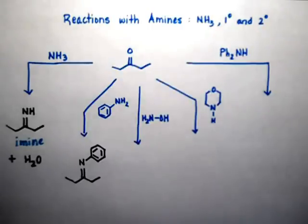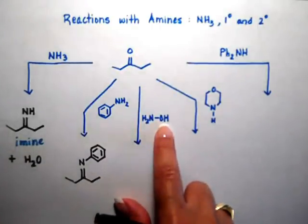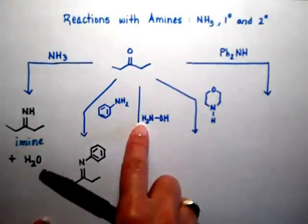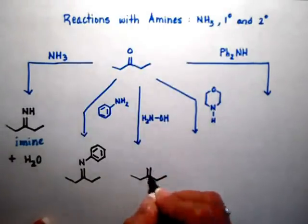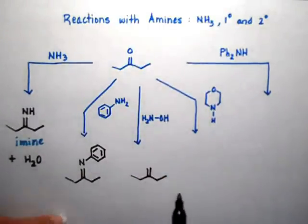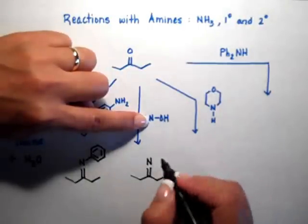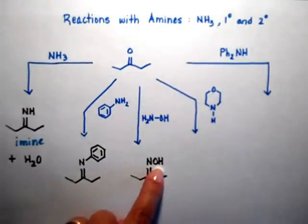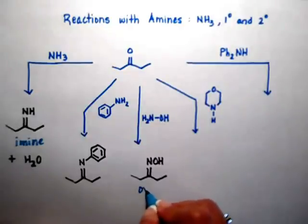It doesn't matter what the third group is — it can be a phenyl, a hydrogen, an OH, or maybe another nitrogen. So when you see an OH attached, this is hydroxylamine. We're going to again take the two hydrogens off and form water with them. Go ahead and make the backbone of your ketone or aldehyde minus the oxygen, and put the nitrogen right here — it has an OH attached to it. When you have a nitrogen attached to an OH and you form your imine, we call it a different name: we call it an oxime.